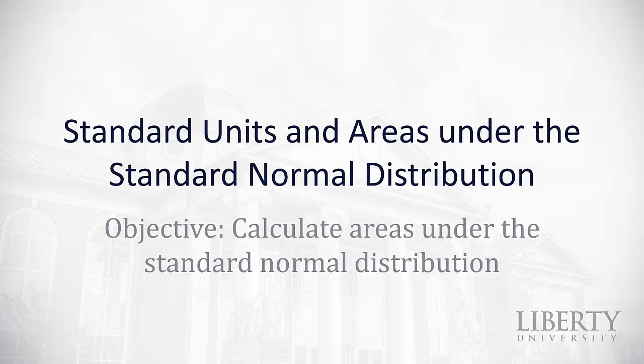Previously with the normal distribution we've used the empirical rule to estimate the area between one, two, and three standard deviations from the mean. Today we're going to look at how we can find the amount of area under the standard normal distribution for any other value of z.